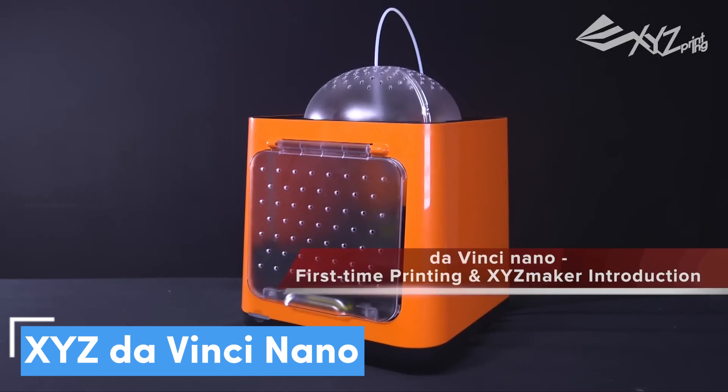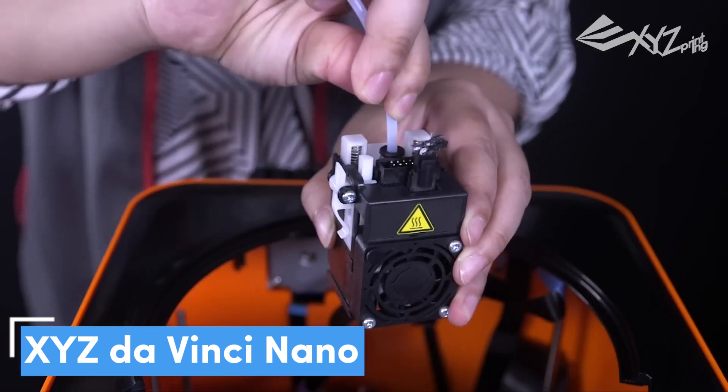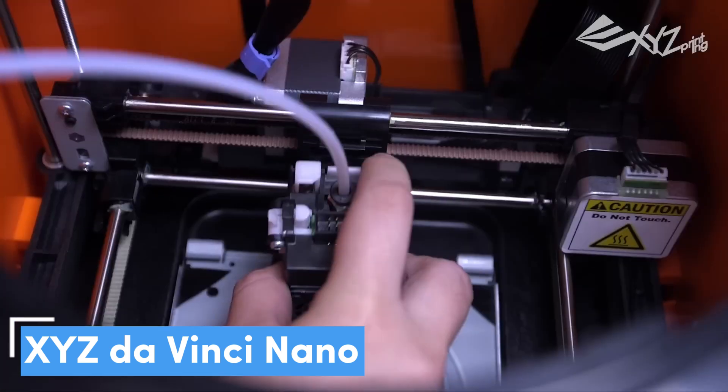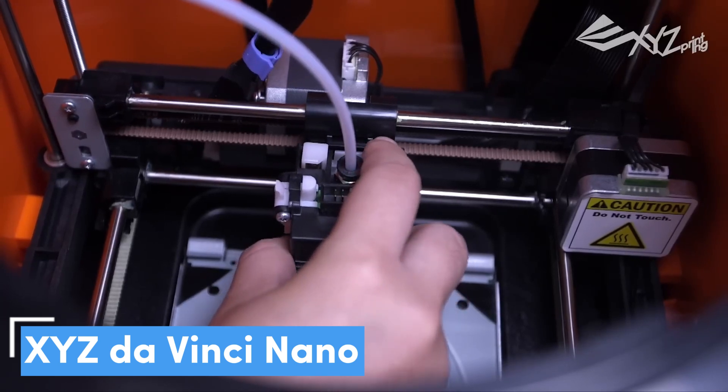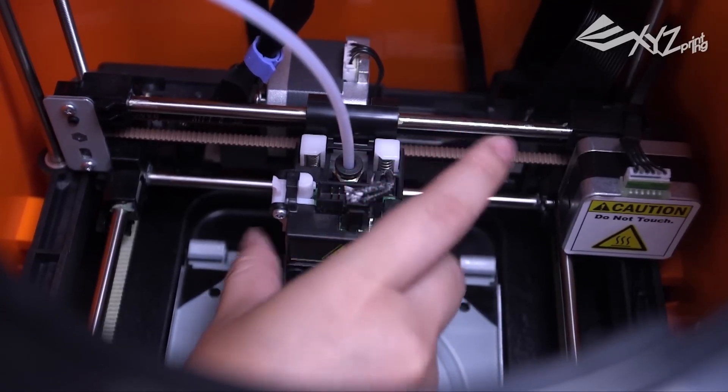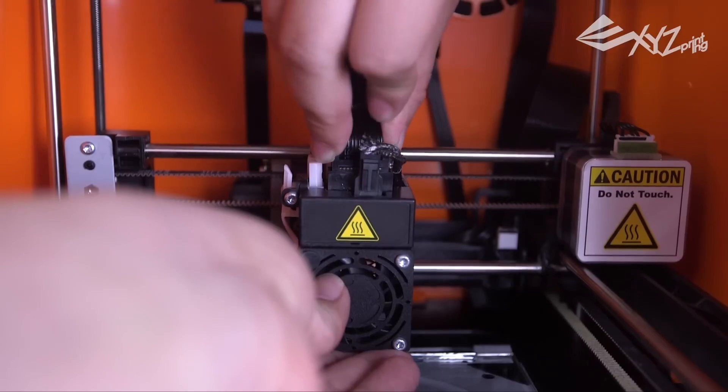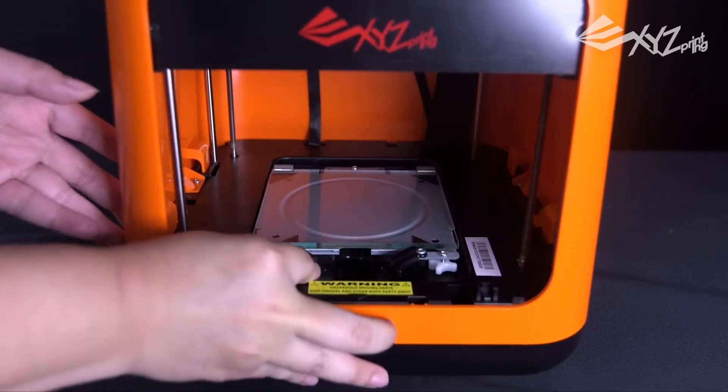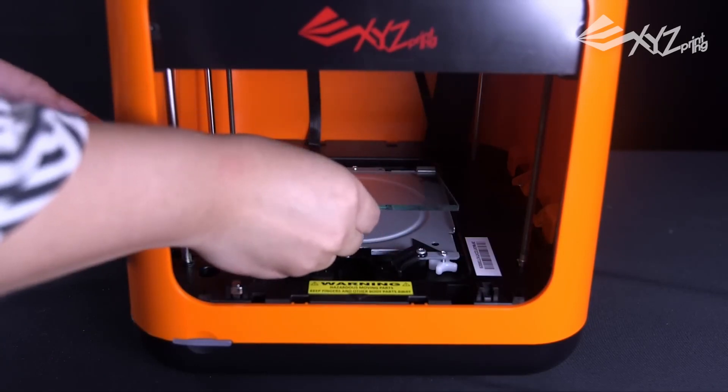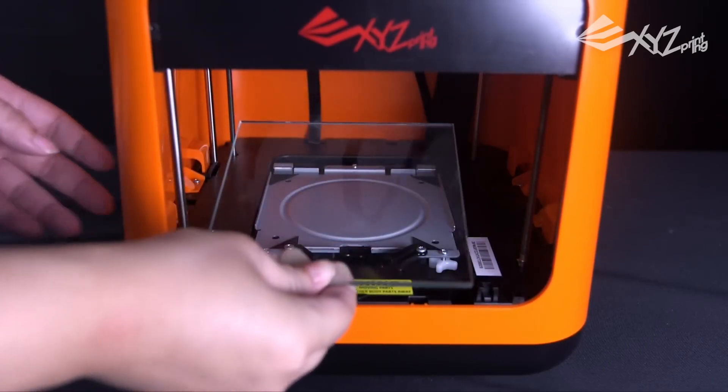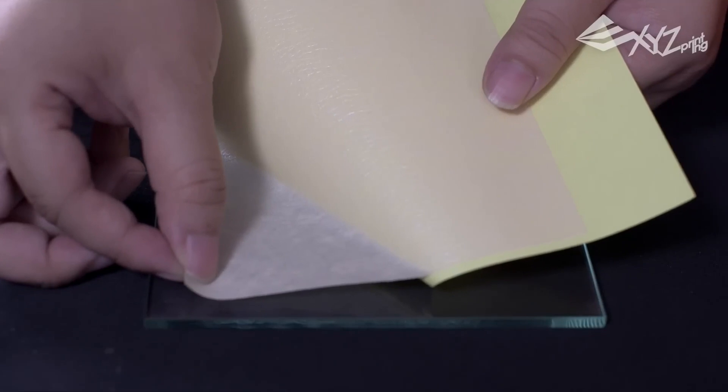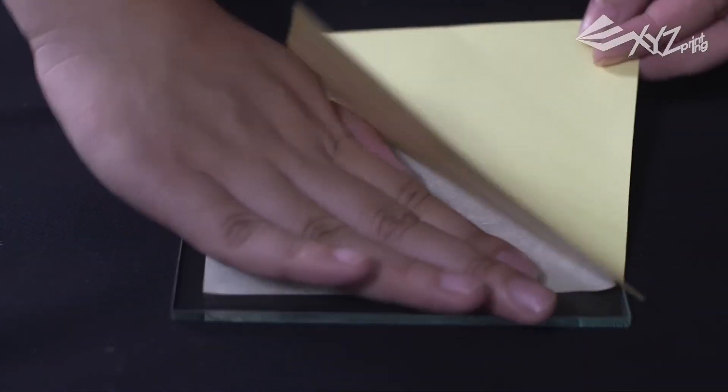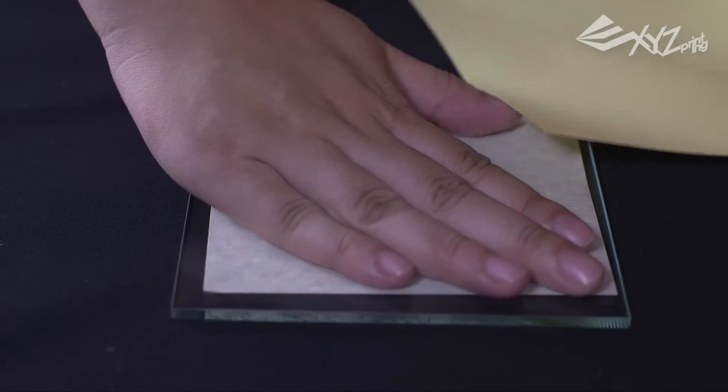Number 2, XYZ DaVinci Nano, the best alternative for beginners. If the Mono Price Voxel is either too difficult to find or too expensive for your budget, the DaVinci Nano from XYZ Printing may be your best low-price option, especially now that the printer appears to be back in stock. The DaVinci is relatively compact, about the size of a bread maker, but it has a generous-for-its-size build area of 4.7 inches on all sides.